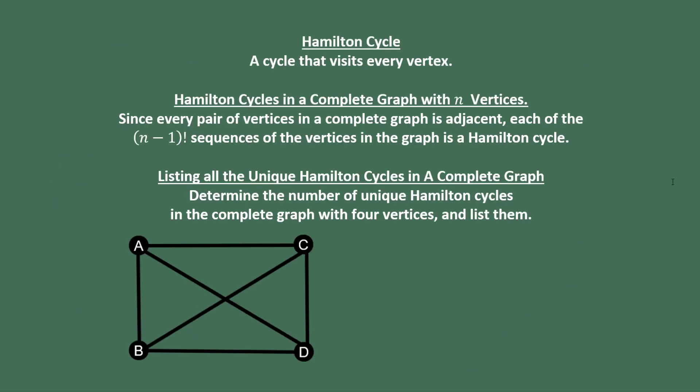A Hamilton cycle is just a cycle that visits every vertex. Remember, a cycle doesn't repeat vertices, so a Hamilton cycle visits every vertex exactly once. Since every pair of vertices in a complete graph is adjacent, each of the sequences of vertices in the graph is a Hamilton cycle, and there are (n-1)! of these sequences.